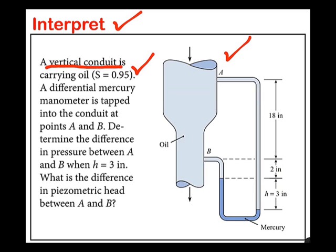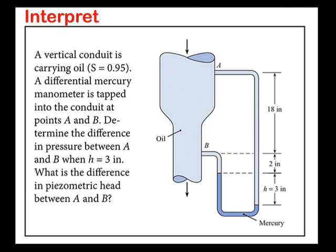A differential manometer is this device here on the side of the pipe. Goal number one is the difference in pressure, so this is goal number one. And this is between point A and point B, so between a point here and a point here. That's goal one, difference in pressure.